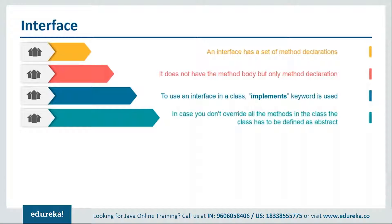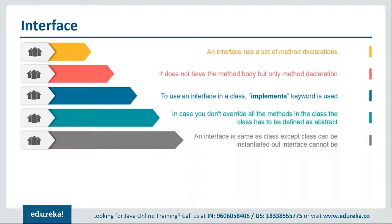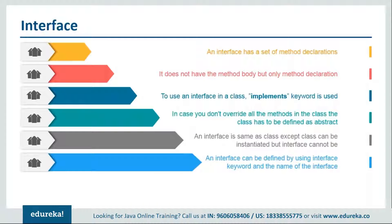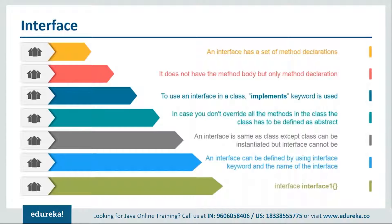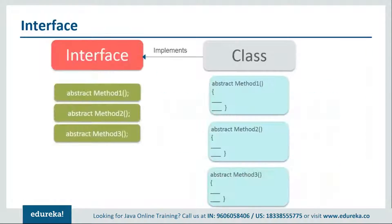If you don't override all the methods in the class, the class has to be defined as abstract. An interface is the same as a class except that a class can be instantiated and an interface cannot — you cannot instantiate an interface no matter what. An interface is defined using the 'interface' keyword followed by the name, e.g., 'interface Shape'. The interface will have abstract methods, and your class will implement the interface using those methods with its own definitions.